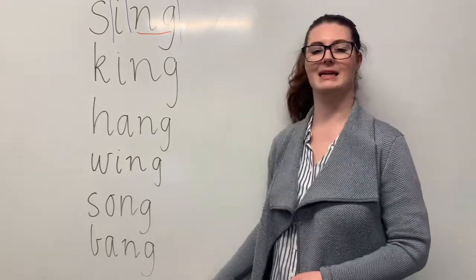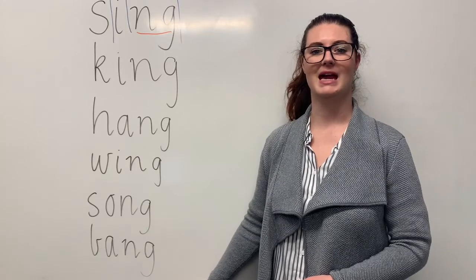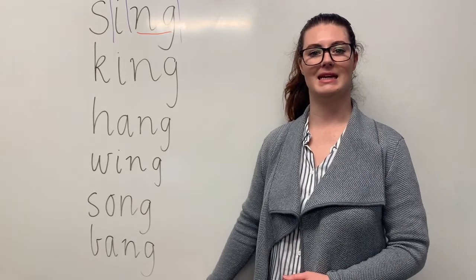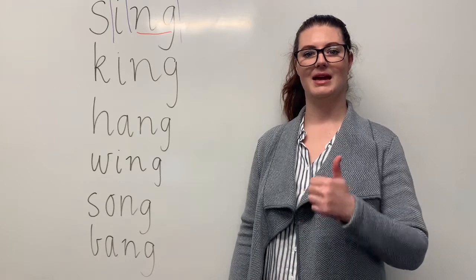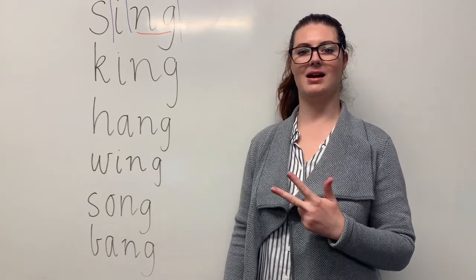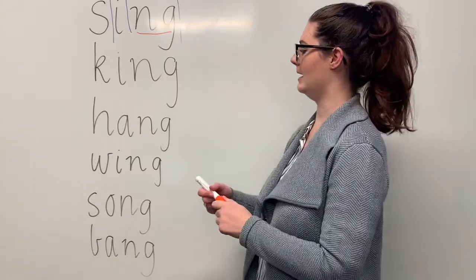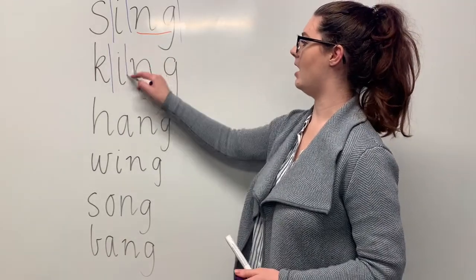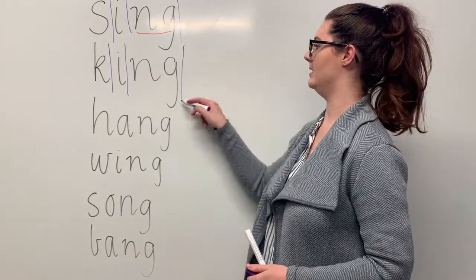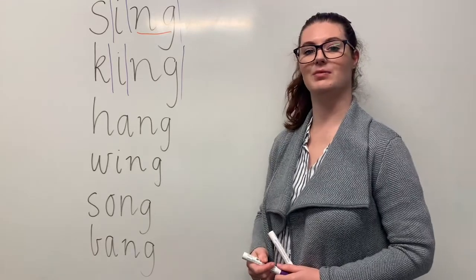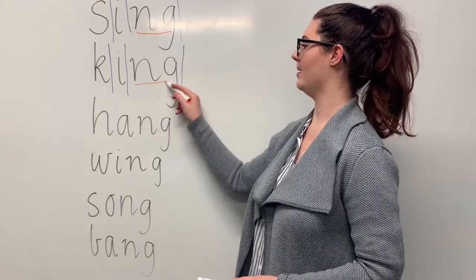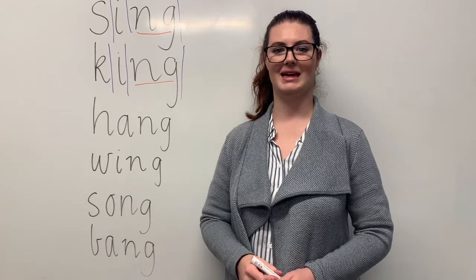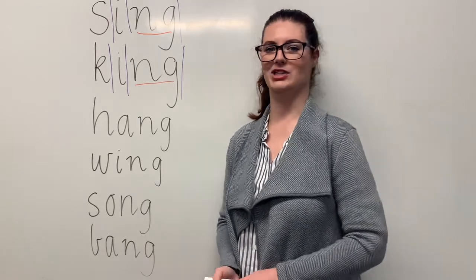Our next word is king. Say king. The king had a large throne. The sounds in king are together: k-i-n. The letters in king are k-i-n-g. The part that we need to remember is the NG diagraph making the N sound. Can you teach it to me? King. K-i-n-g.